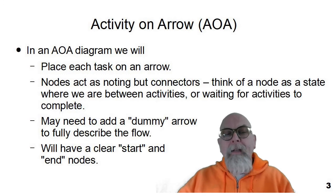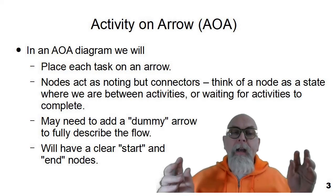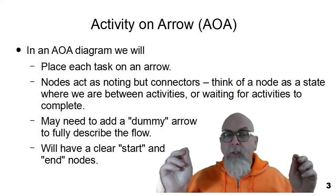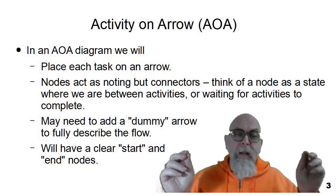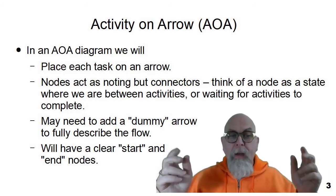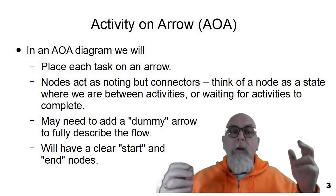You may need to add a dummy arrow or an activity with zero duration or with no job, but call it dummy, just to fully describe the flow. And in an AOA diagram, there will be a clear start node and a clear end node, and it should be marked so the arrows all go from a node to a node.